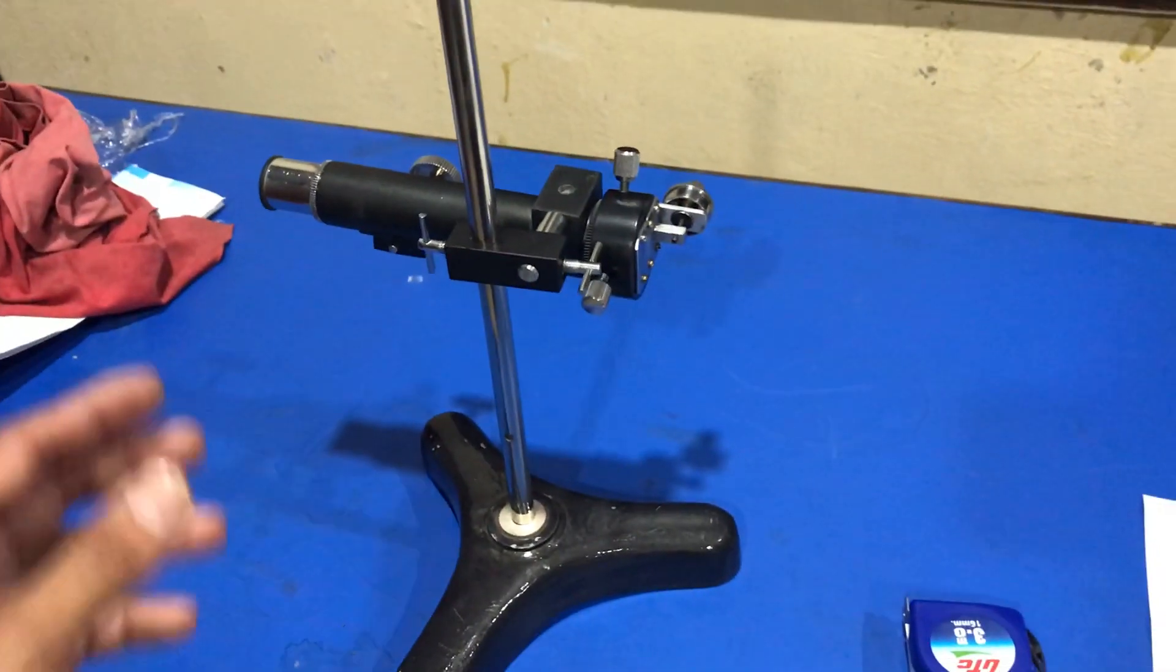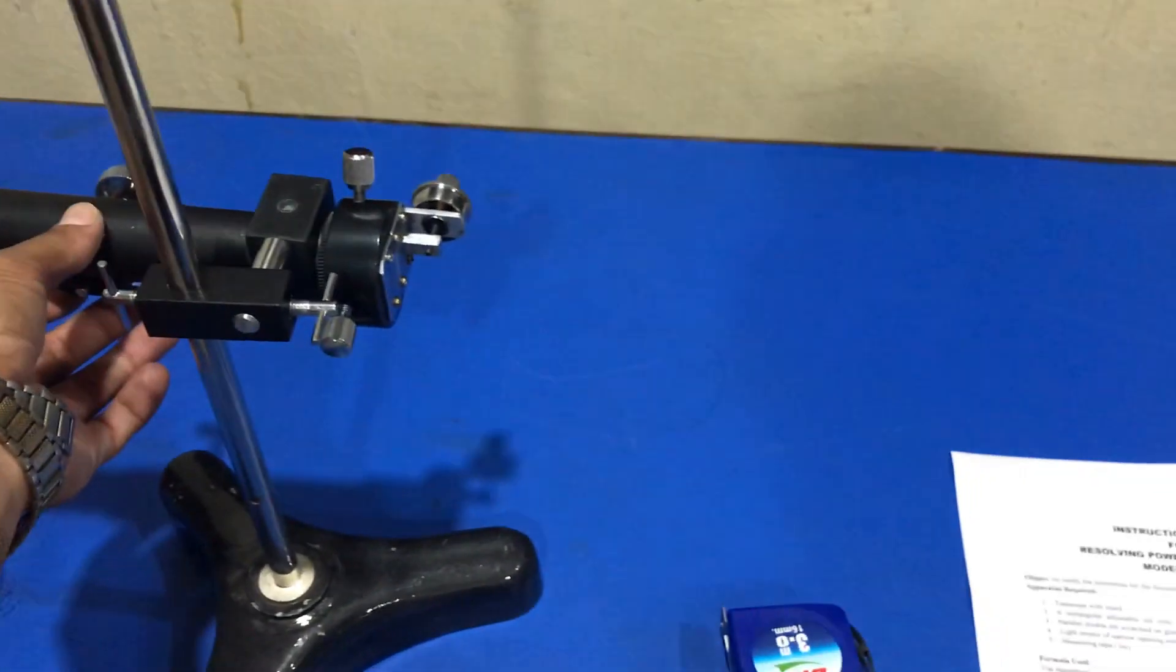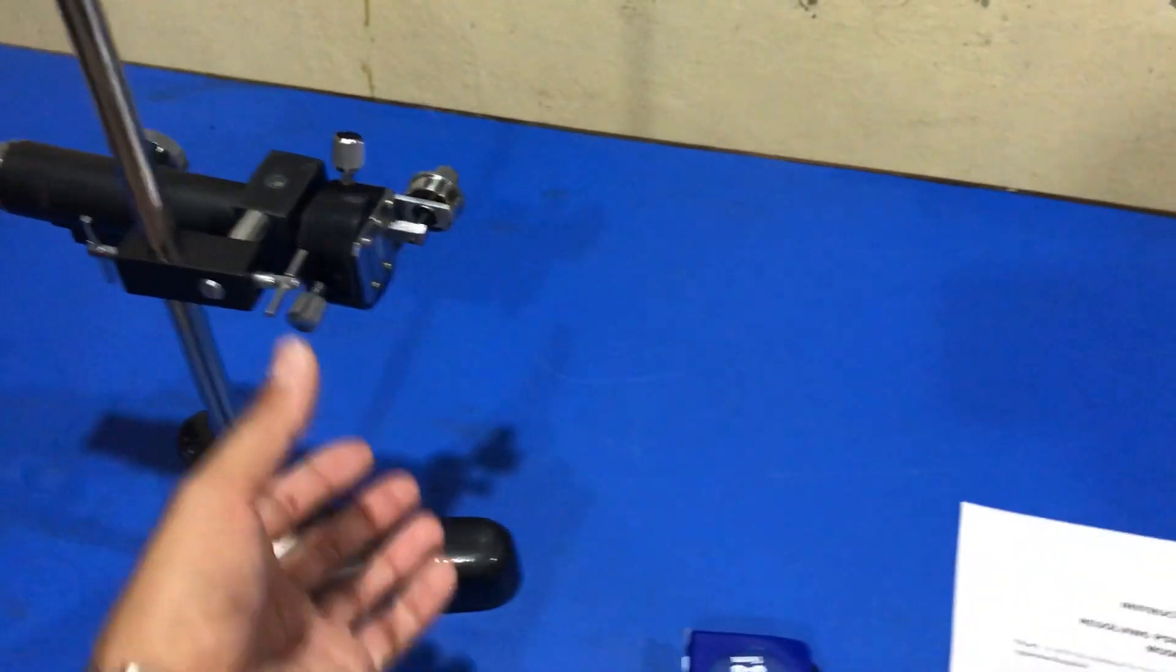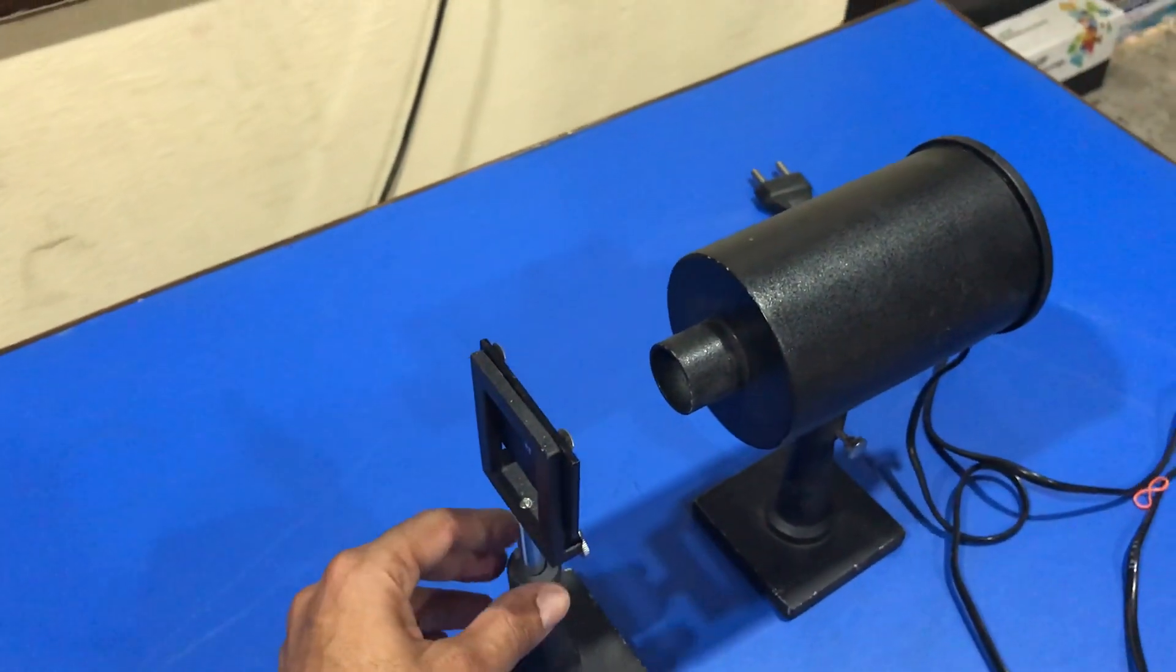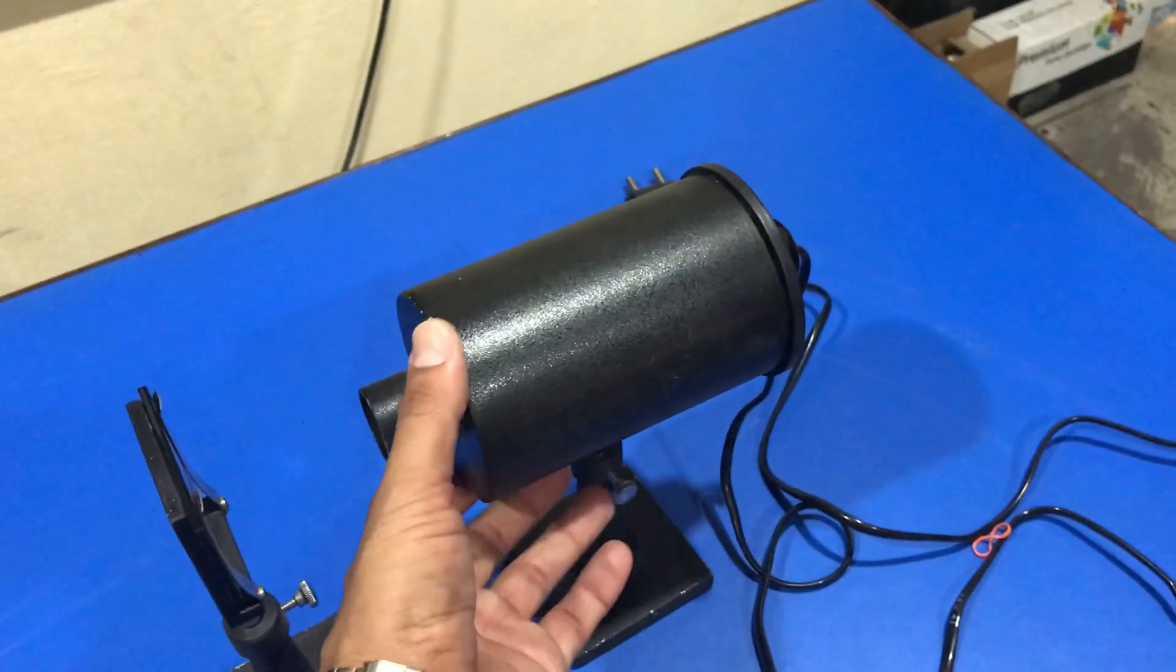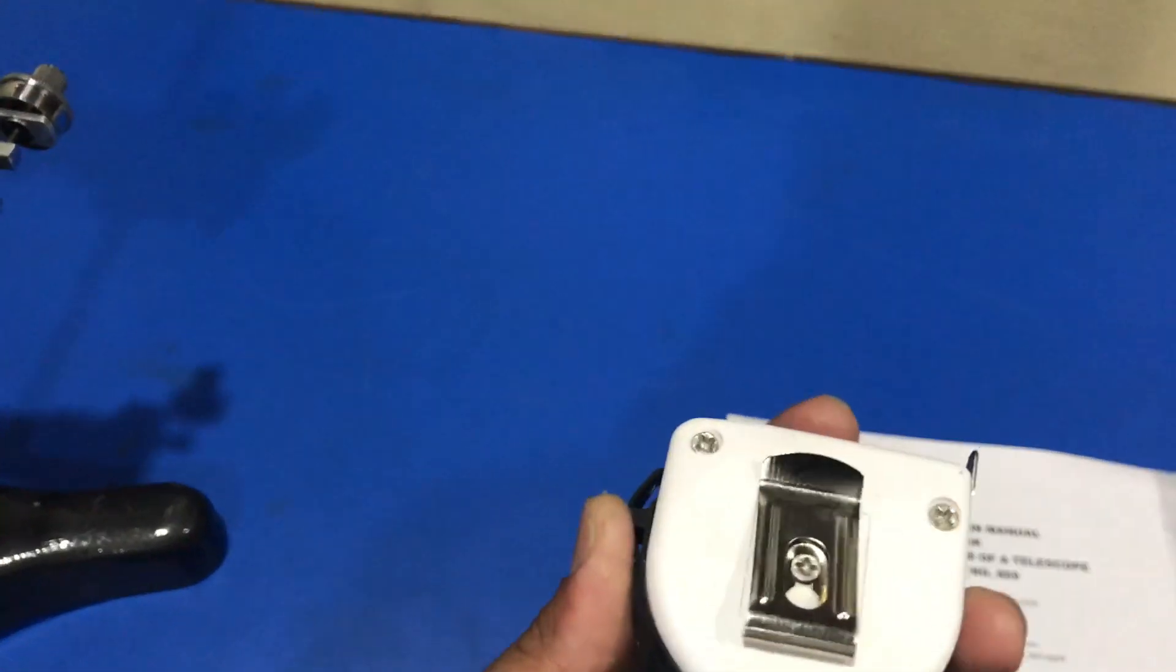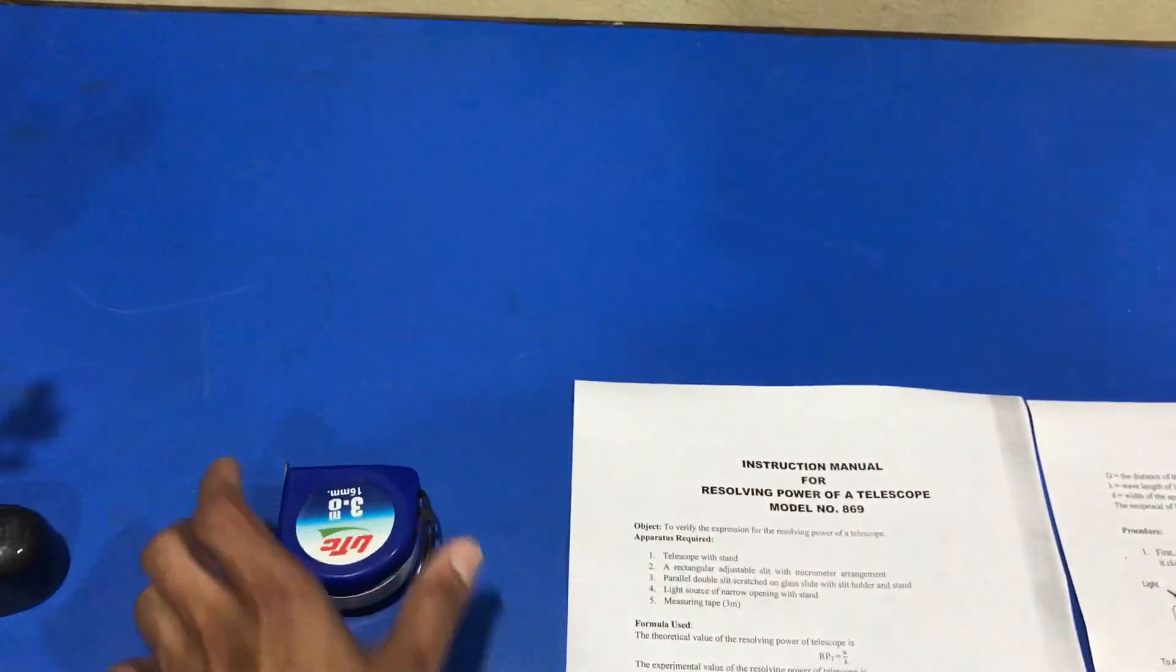In order to perform this experiment, we require a low power telescope with stand, micrometer slit, double slit with slit holder and stand, lamp, and a measuring tape of approximately three meters.